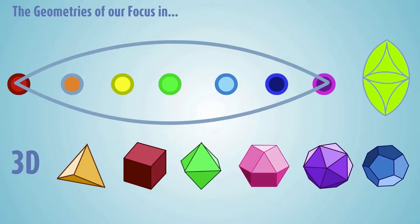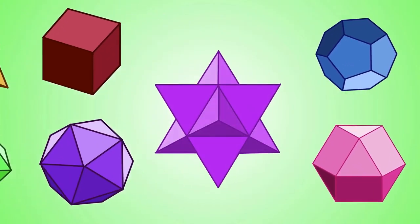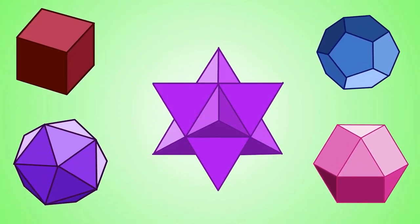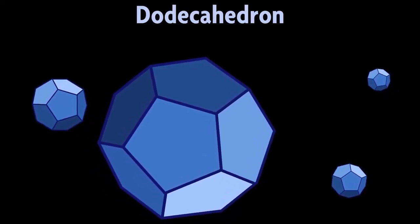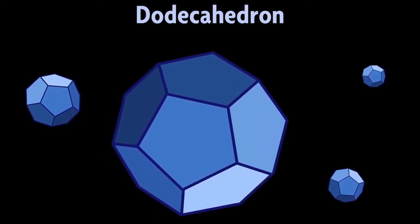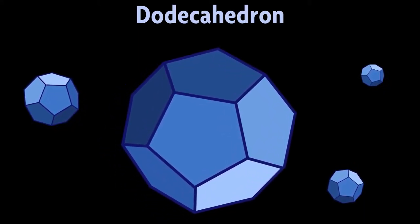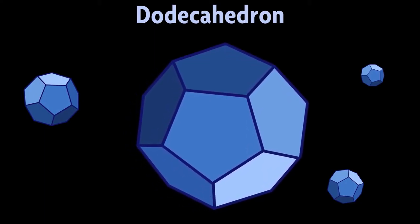These geometries also work in tandem with the chakras. Everything is connected. So we have the four elements down, which means there are two more geometries to look at — well, actually three, but the Merkaba is a whole video on its own. The fifth geometry is the dodecahedron, which I associate to being the life geometry.